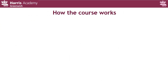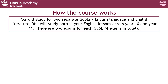So how will the course work in Key Stage 4? There are two separate GCSEs — English Language and English Literature. You'll study both across your English lessons in Year 10 and Year 11. Roughly 50% of your lessons will be literature and 50% language, and you will take two exams for each GCSE at the end of Year 11 — so four exams in total.